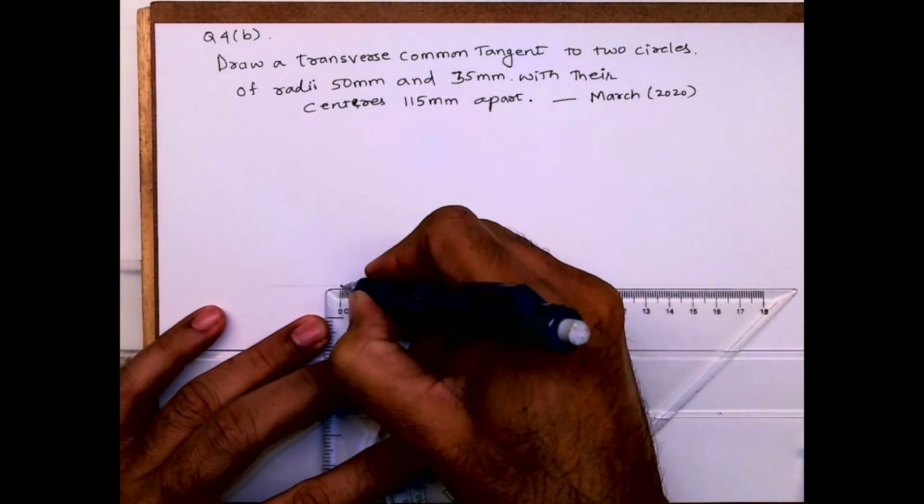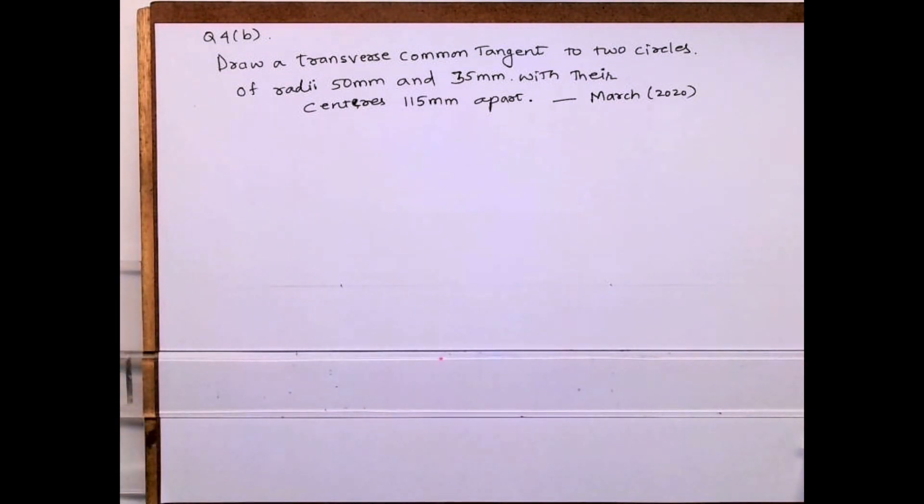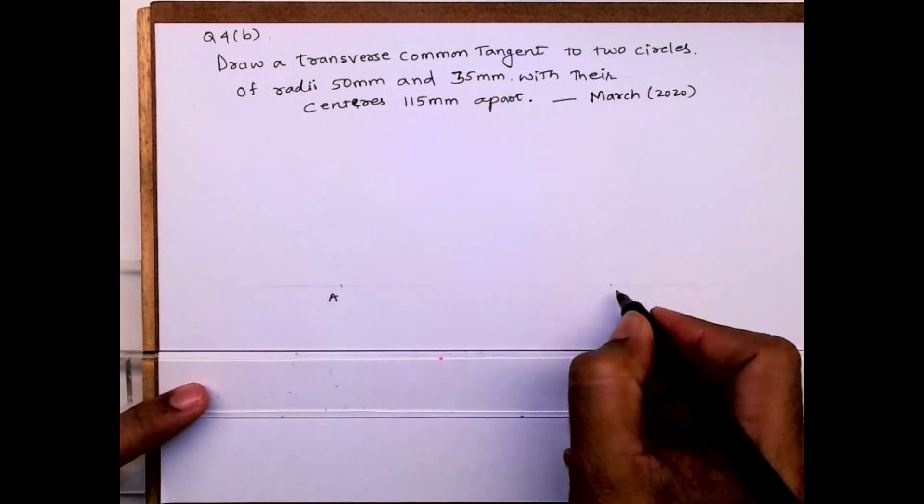Now first we will mark 115 distance, that is 115. We'll write point A and B.